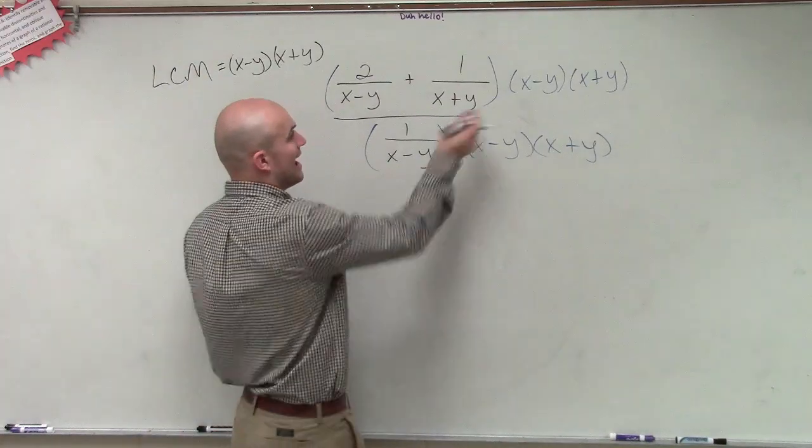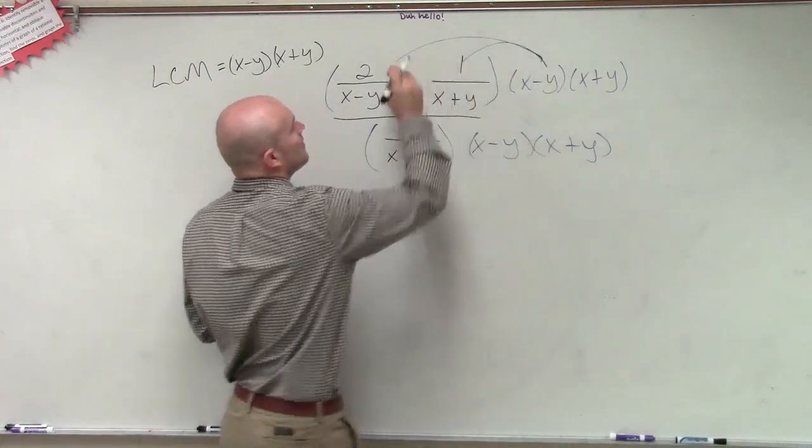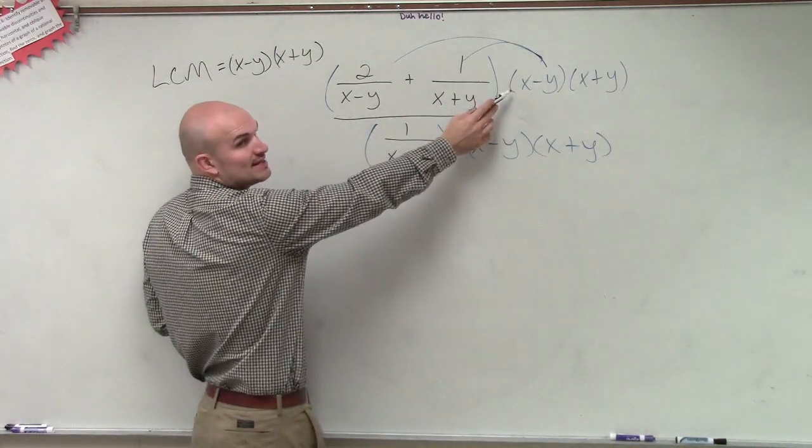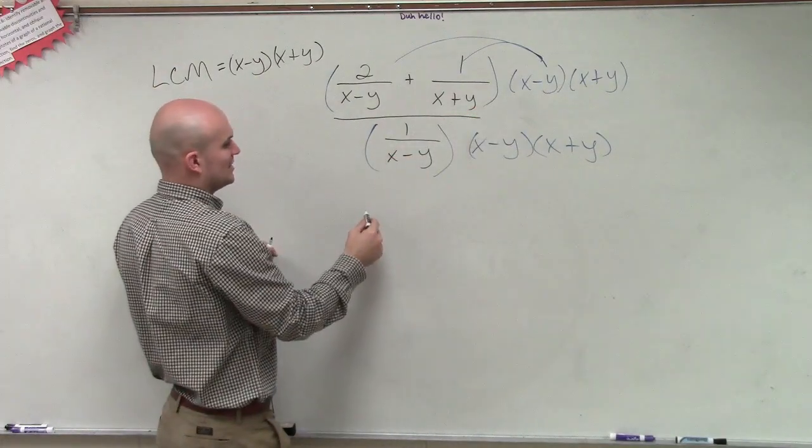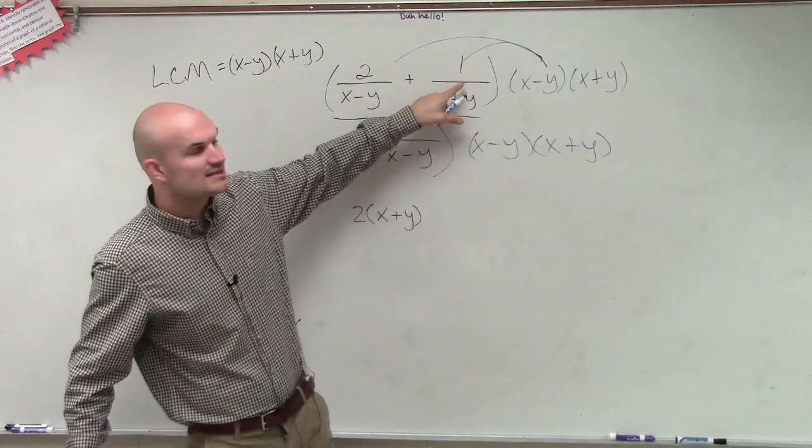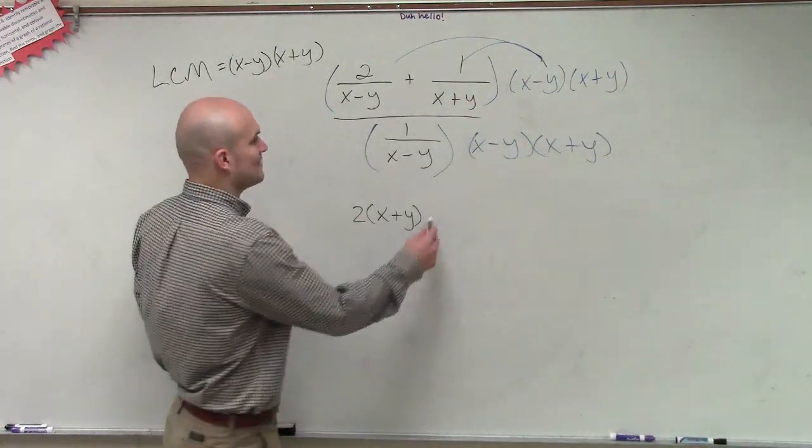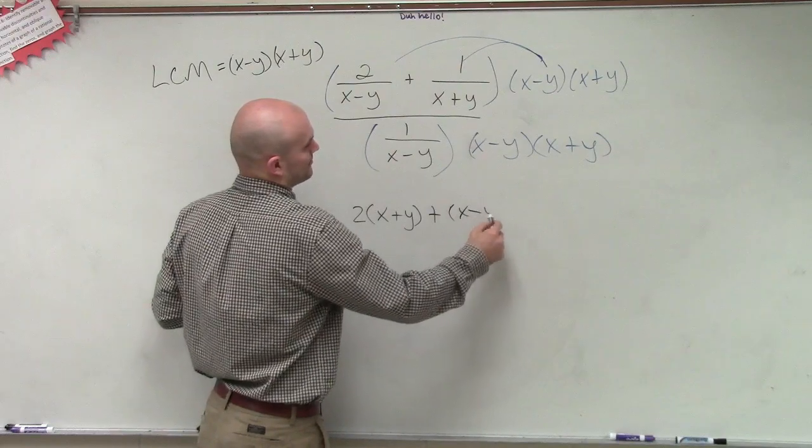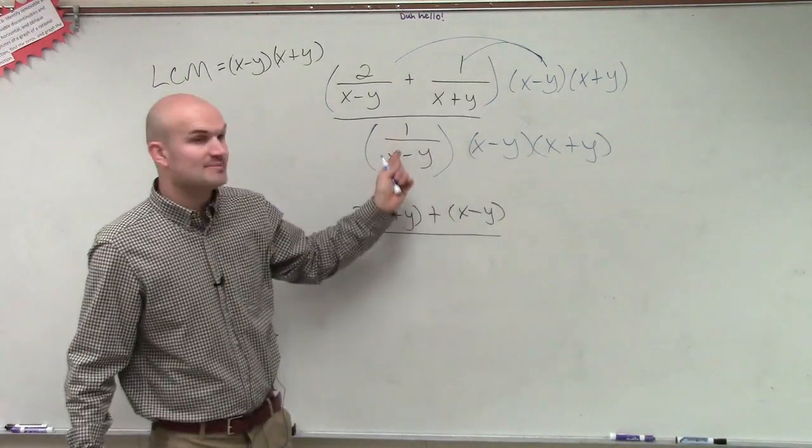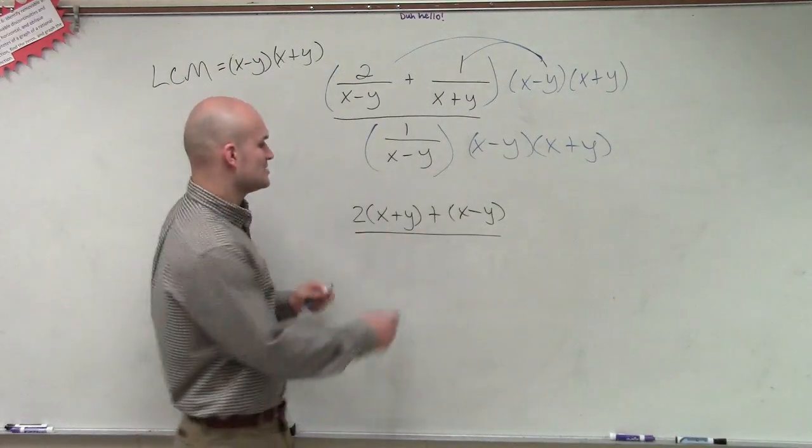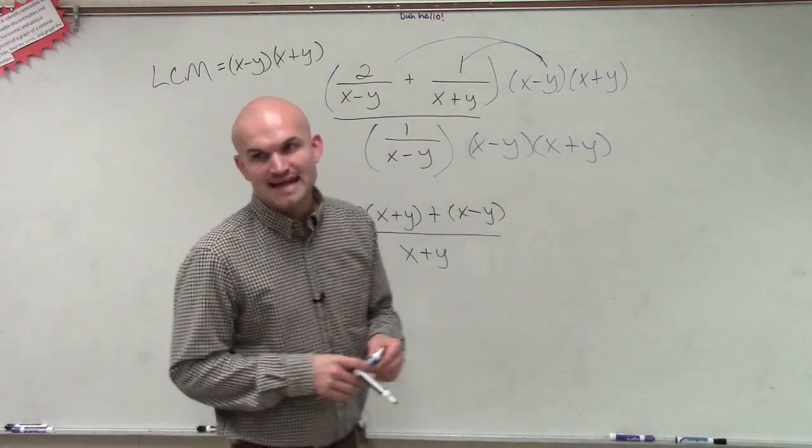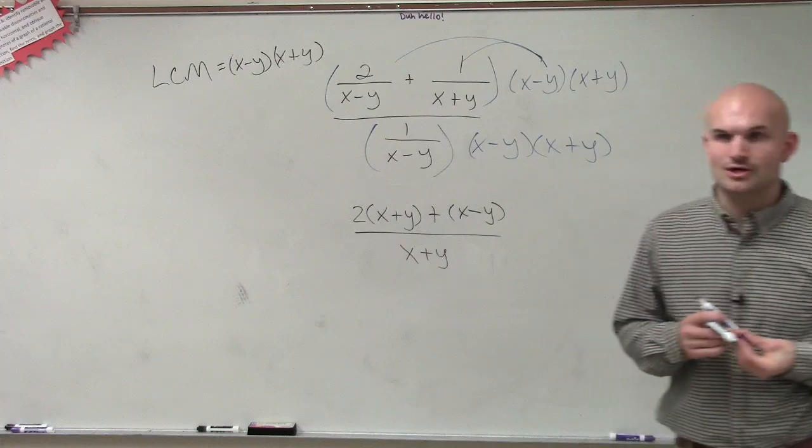So now we have to apply here. I have an expression. So I need to apply distributive property. When I apply distributive property, the x minus y divides with the x minus y to give us 1. So therefore, I'm only going to be left with 2 times x plus y. When I multiply x minus y times x plus y times this, my x plus y and my x plus y divide to 1. So I'm just left with x minus y. When I multiply my common denominator or my least common multiple times this, my x minus y and my x minus y divide to 1. So I'm just left with x plus y. Any questions on that step?